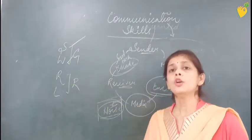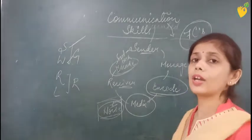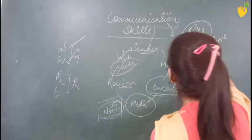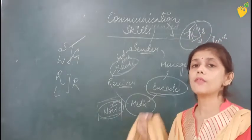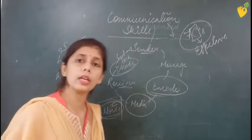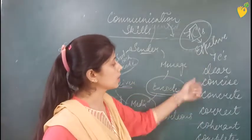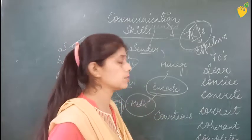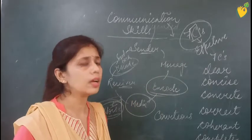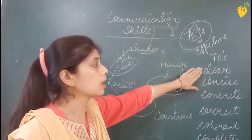There are seven C's which emphasize the effectiveness of communication. These are seven words beginning with C, which is why they are called the seven C's of effective communication. The seven C's are: clear, concise, concrete, correct, coherent, complete, and courteous. Clear means you should be clear about your thoughts and what is to be communicated — everything should be clear in the mind of the sender. It should be concise — to the point — you should deliver the content in a concise manner.